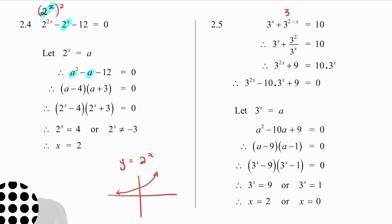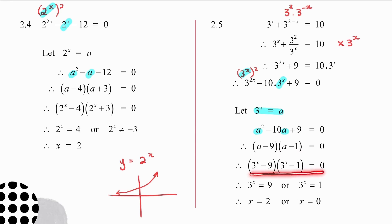In 2.5, I write 3 to the 2 minus x as 3 squared times 3 to the minus x, and 3 to the minus x is 1 over 3 to the x. I multiply through by the common denominator, giving 3 to the 2x on one side, 9 on another term, and 10 times 3 to the x. I take a term across to set up the trinomial. Writing 3 to the 2x as 3 to the x squared, I let 3 to the x equal a, factorize, and replace back. So either 3 to the x equals 9, giving x equals 2, or 3 to the x equals 1, giving x equals 0.